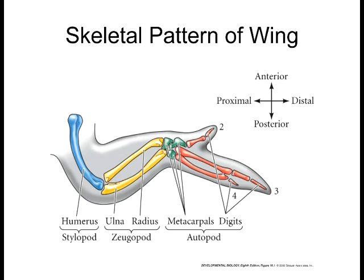Usually we're not going to say left-right — we're going to say dorsal-ventral. In the case of hands, dorsal is the back of your hand and ventral is the palm of your hand. Those are the dorsal-ventral axes for limb development.